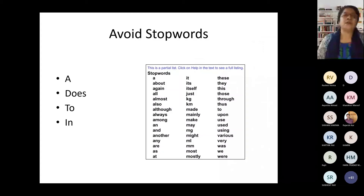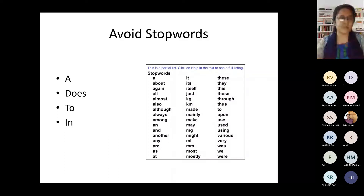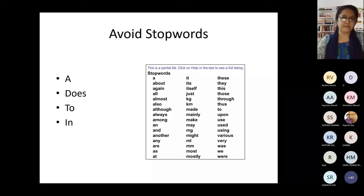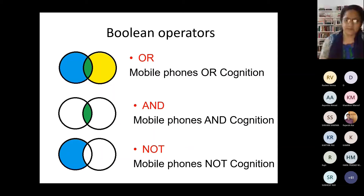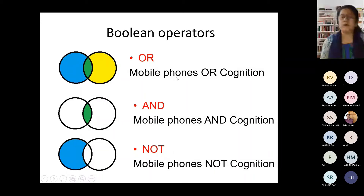One very important point: you don't need to type the stop words — all the words like 'does,' etc. in your question. You just need to type your keywords. The most important point is to avoid using stop words in your search. Then there are Boolean operators: OR, AND, and NOT.